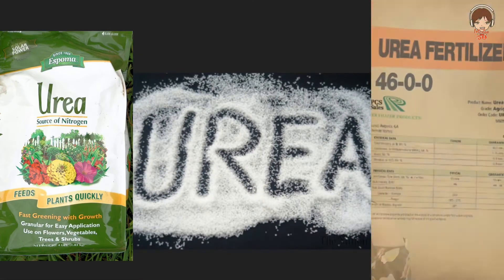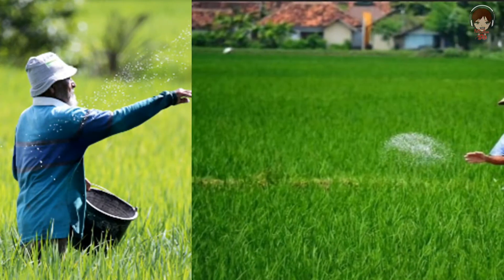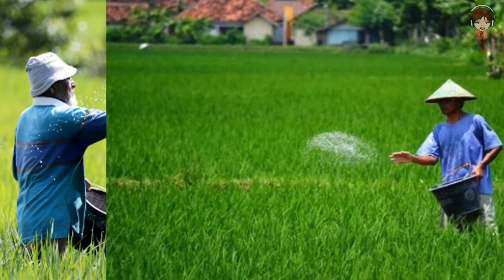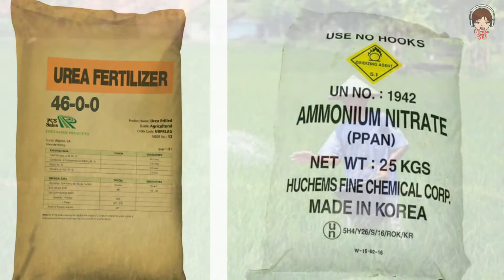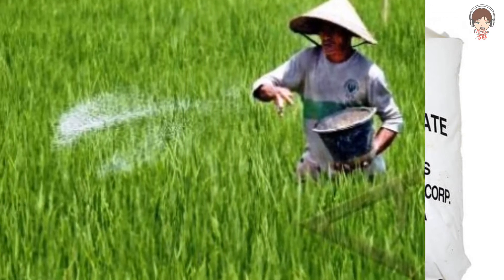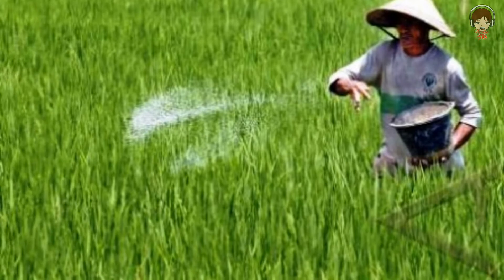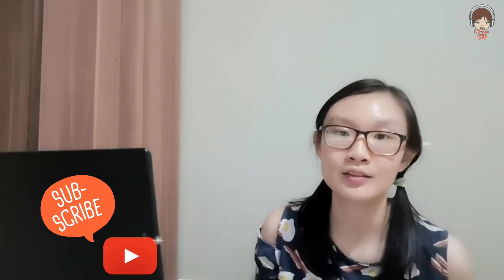We know that Urea is also a fertilizer, which is an organic compound, compared to Ammonium Nitrate which is not an organic compound. Ammonium Nitrate's advantage over Urea is that it is more stable and does not repeatedly lose nitrogen to the atmosphere compared to Urea. Now you know that it is used as a planting fertilizer.